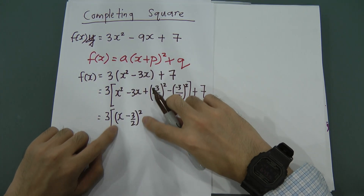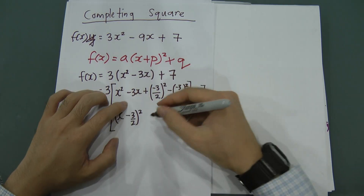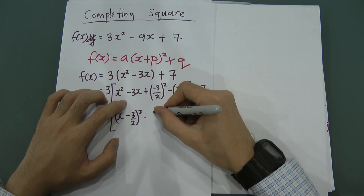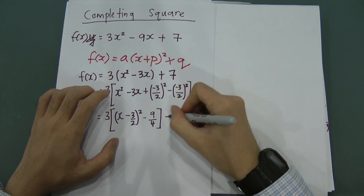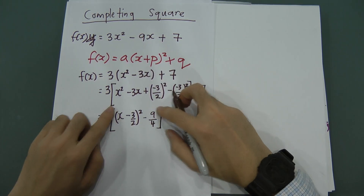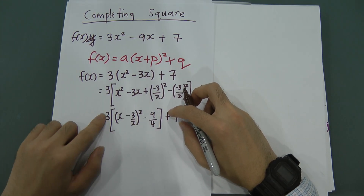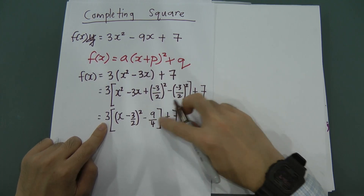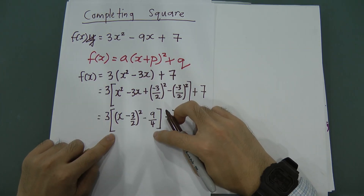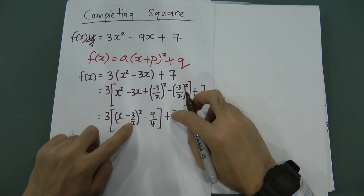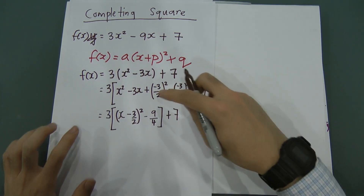You can expand the bracket to verify. Then minus (-3/2)² gives minus 9/4. The bracket around all of this is very important, because after this I need to multiply 3 into the whole bracket. If you forget the bracket, the 3 only applies to part of it, but we factorized out 3 for both terms.